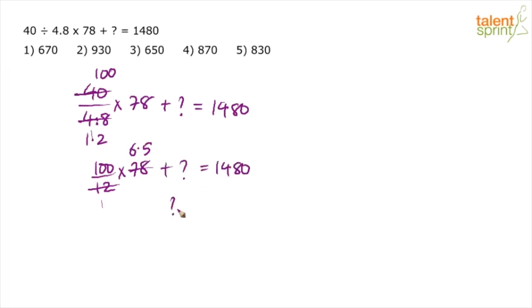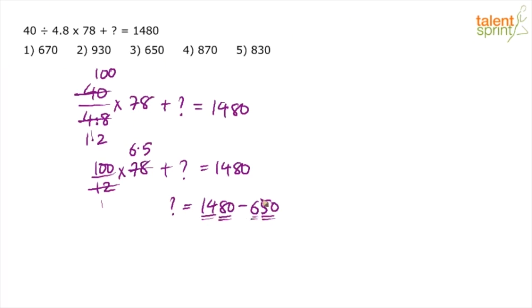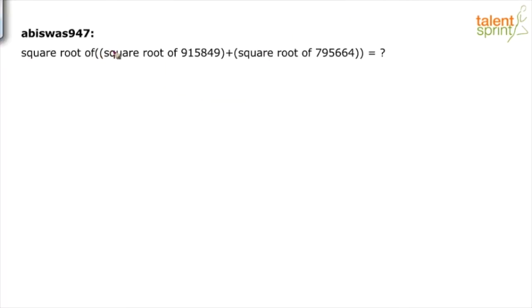So the question mark will be 1480 minus 650. That is: 80 minus 50 is 30, and 1400 minus 600 is 800. So 800 plus 30 equals 830. The answer to option 5 now follows — we need to find the square root of 915849.